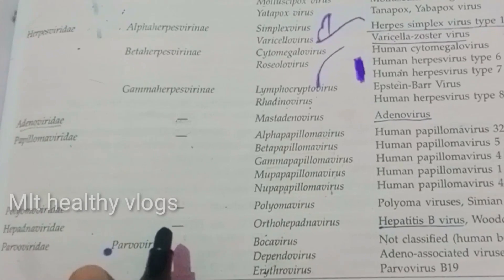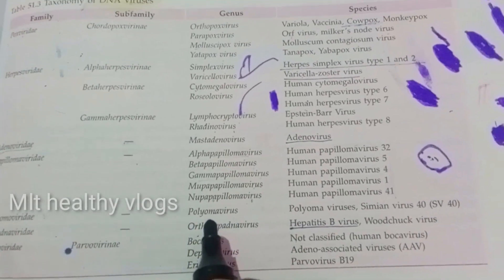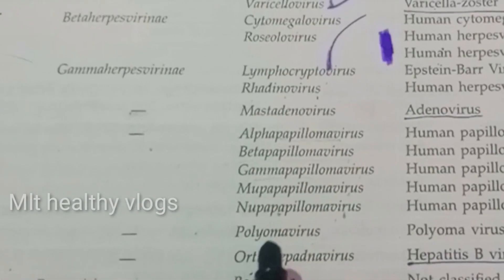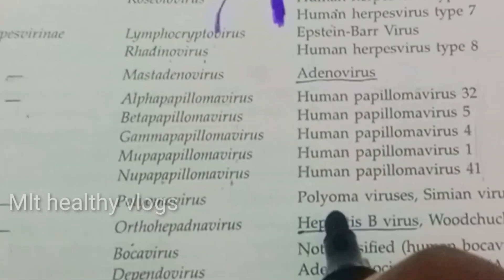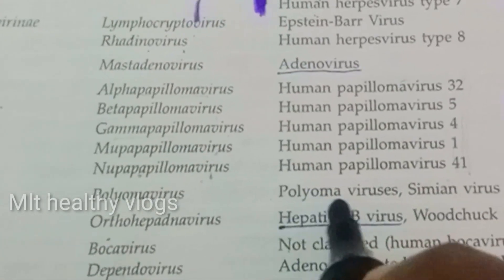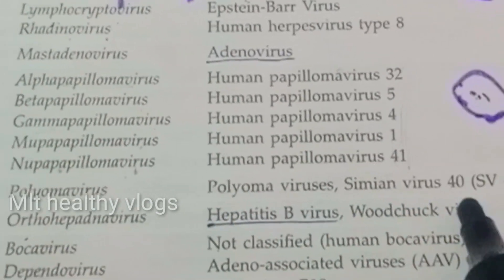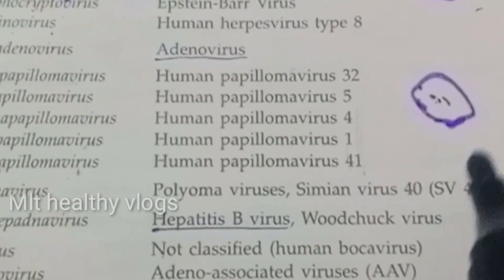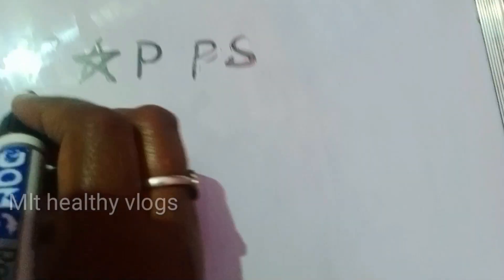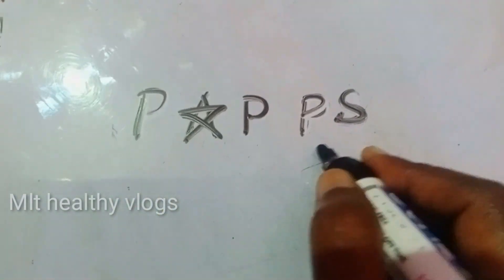Polyomaviridae: there is no subfamily. The genus is Polyomavirus and the species are Polyomavirus and Simian Virus 40 (SV40).